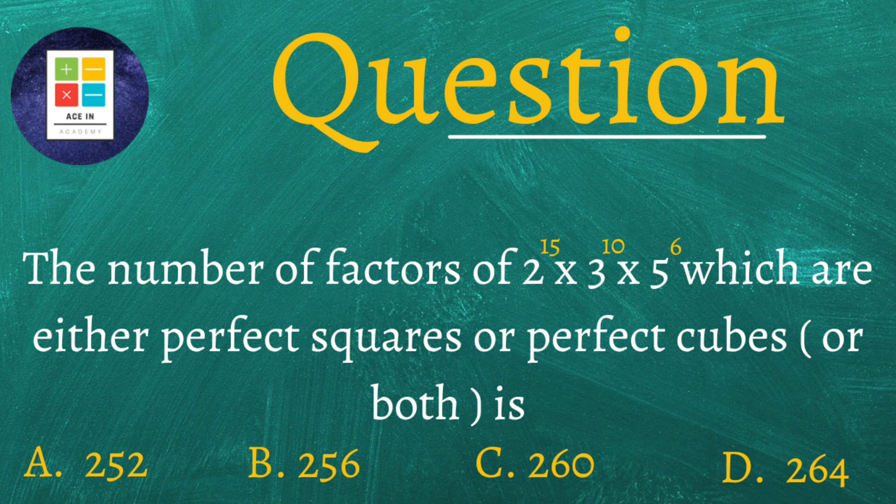The question asks for the number of factors of 2 raised to the power 15 into 3 raised to power 10 into 5 raised to power 6 which are either perfect squares or perfect cubes or both. We are provided four options: A is 252, B is 256, C is 260, and D is 264.